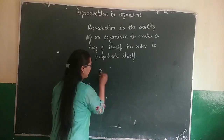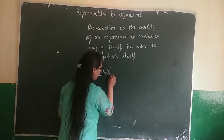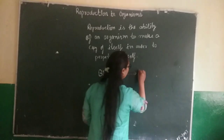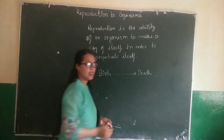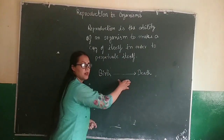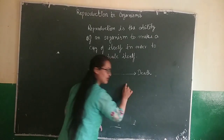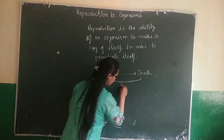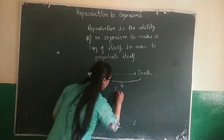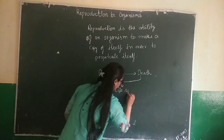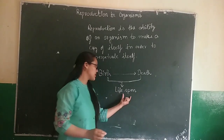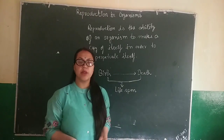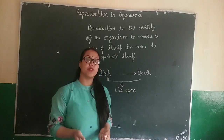We all know every individual takes birth and every individual dies. These processes are inevitable. This duration between birth and death is referred to as life span. This life span varies greatly from organism to organism. There are certain microorganisms that have a life span of just a few hours.